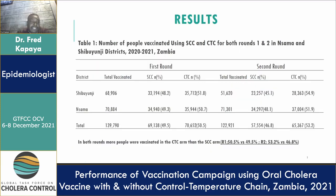Looking at the results table, we are comparing those vaccinated using the standard cold chain and the CTC in both districts for round one and round two. In both districts and both rounds, more people were vaccinated using the CTC strategy. In round one, 50.5% were vaccinated using CTC versus 49.5% with standard cold chain. In round two, 53.2% were vaccinated with CTC compared to 46.8% with the standard cold chain.